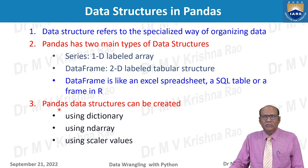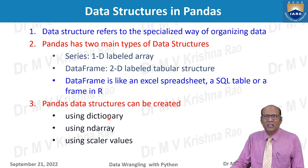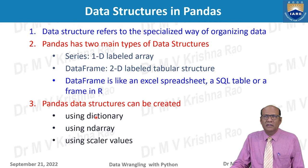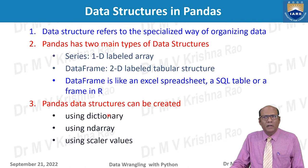A DataFrame is a two-dimensional data structure that can store data of different types, including characters, integers (32-bit, 64-bit, or 128-bit), and floating point values. Other types include strings and categorical data. One important thing: in each column of the data frame, the data type is the same. For example, column 1 may be integers, column 2 may be strings, column 3 may be date or time.